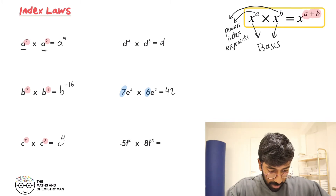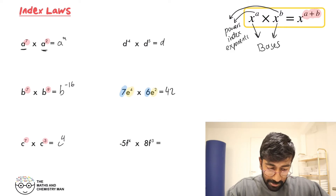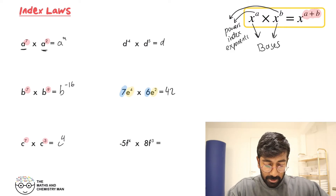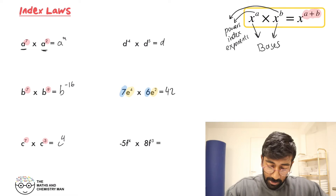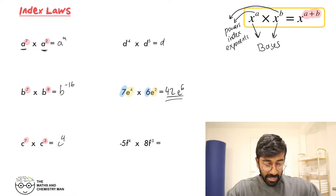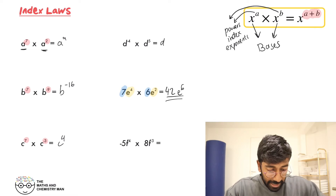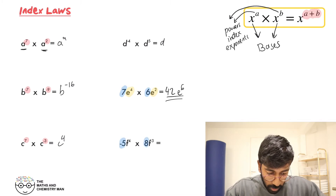You add those ones together, so you get E to the power of 6. Done. And the one beneath that — let's separate this. We'll get the ordinary numbers highlighted in blue, and that's minus 5 times 8.